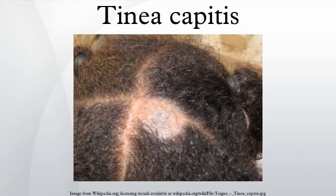Favus is caused by T. schoenleinii, and is endemic in South Africa and the Middle East. It is characterized by a number of yellowish, circular, cup-shaped crusts grouped in patches like a piece of honeycomb, each about the size of a split pea, with a hair projecting in the center. These increase in size and become crusted over, so that the characteristic lesion can only be seen around the edge of the scab.